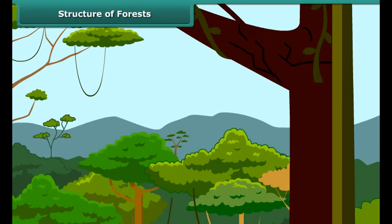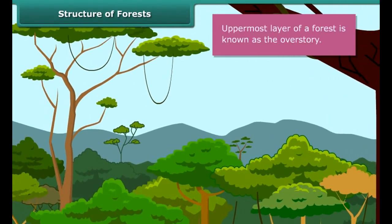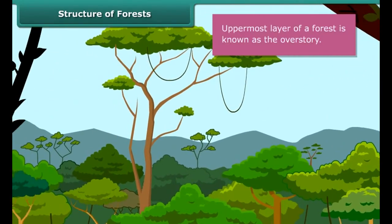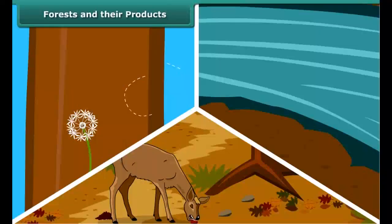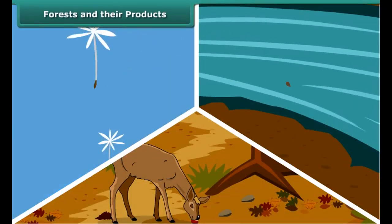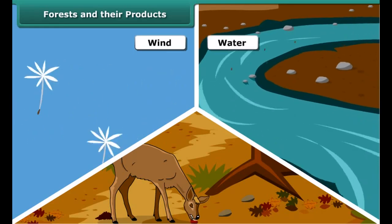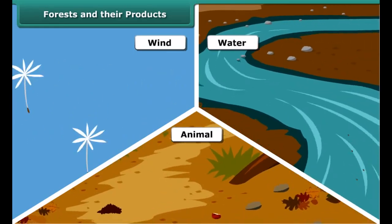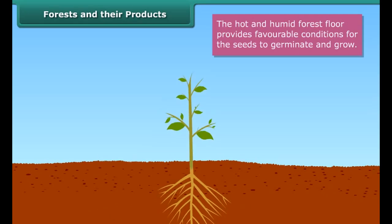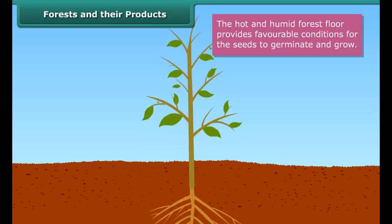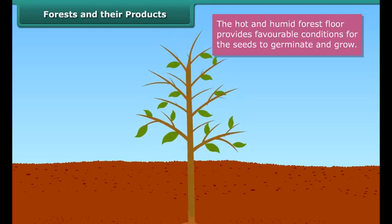A forest has a layered appearance with trees of different heights. While the uppermost layer is known as the overstory, the lower layers formed by shrubs, herbs, and mosses constitute the understory. Seeds produced by trees are dispersed by wind, water, and animals. The hot and humid forest floor provides favorable conditions for seeds to germinate. Seedlings emerge from germinated seeds and grow into saplings, and then into trees.